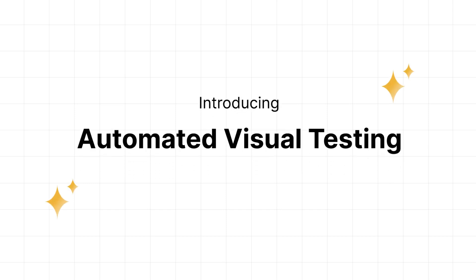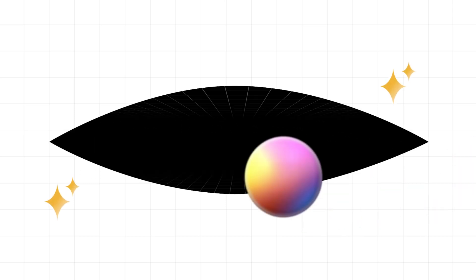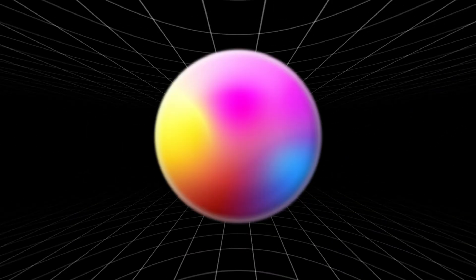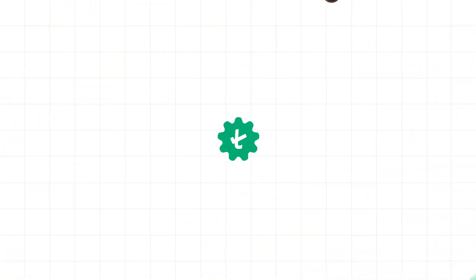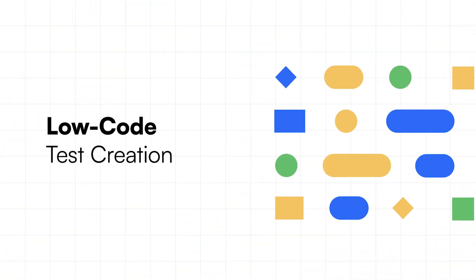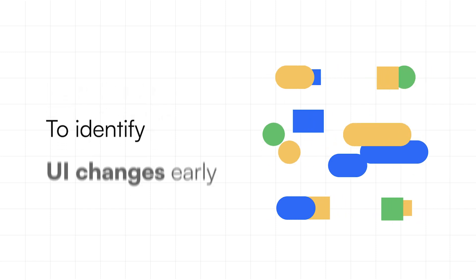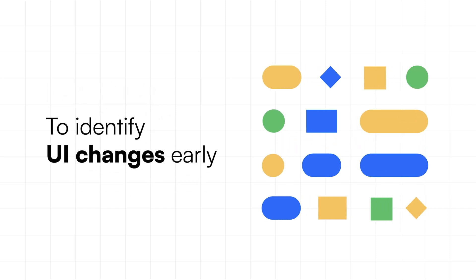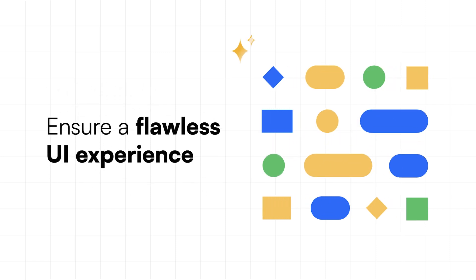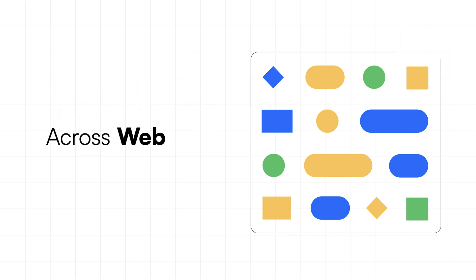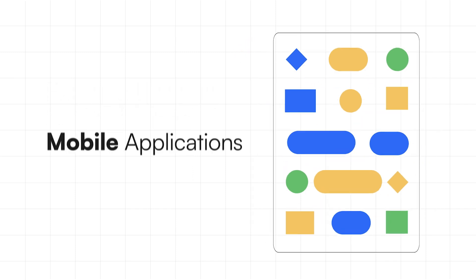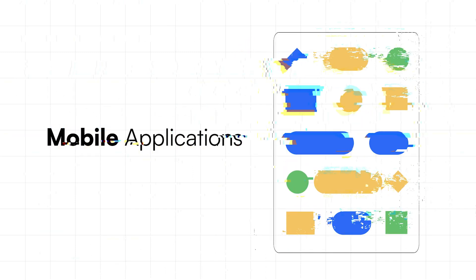Introducing automated visual testing in TestSigma. Create low-code visual tests to identify UI changes early and ensure a flawless UI experience across web and mobile applications.